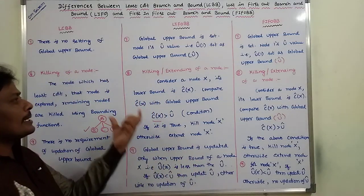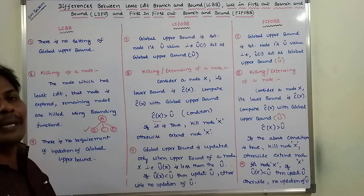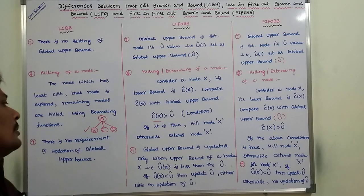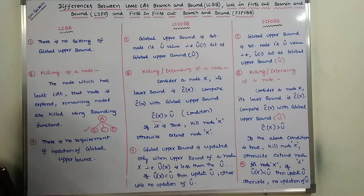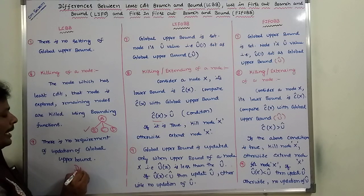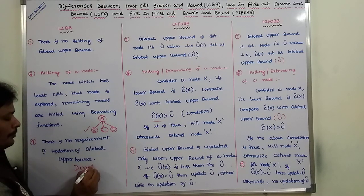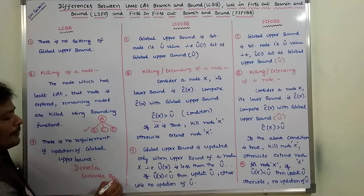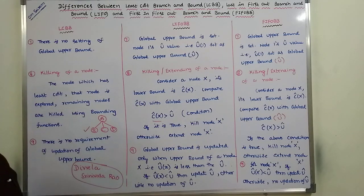These are the main differences between LIFO branch and bound, FIFO branch and bound, and least cost branch and bound. Thank you for watching this video. If you like this video, please subscribe to my channel Deepvela Srinivasarava, and share this video with your friends and classmates.